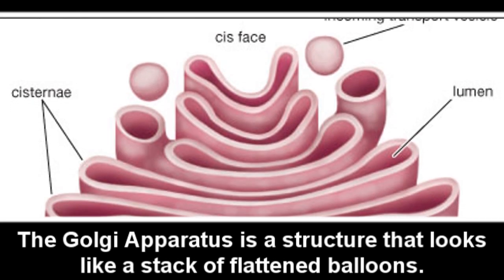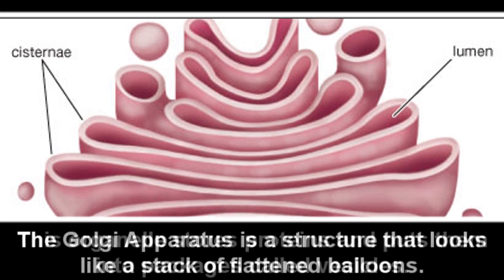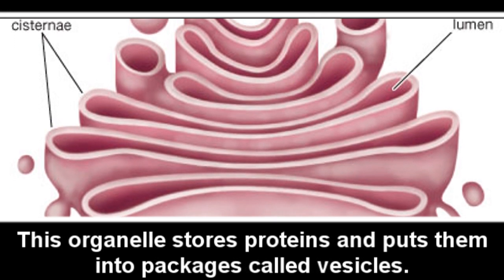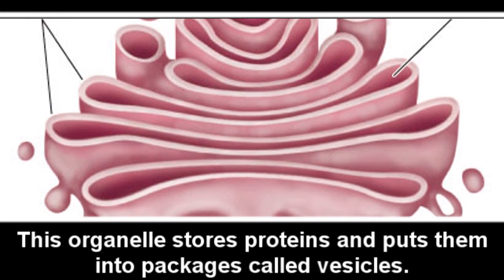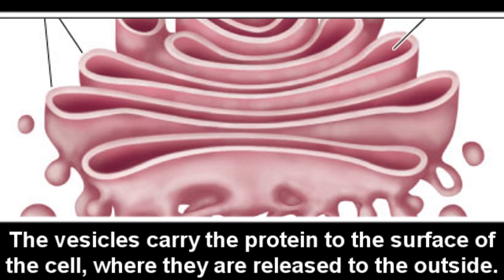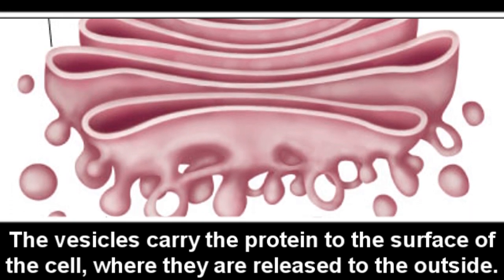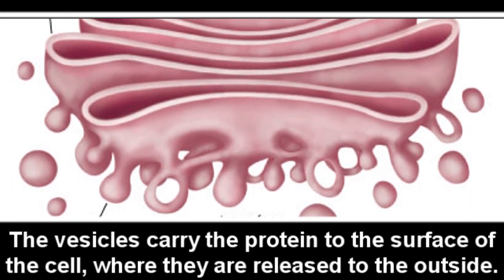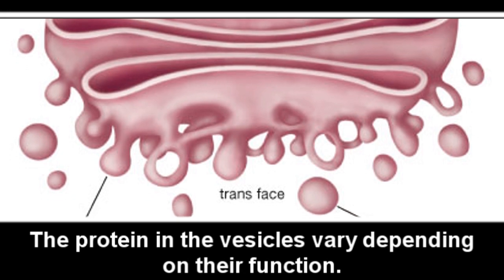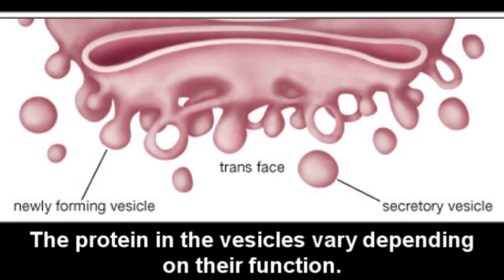The Golgi apparatus is a structure that looks like a stack of flattened balloons. This organelle stores proteins and puts them into packages called vesicles. The vesicles carry the protein molecules to the surface of the cell, where they are released to the outside. The proteins in the vesicles vary depending on their function.